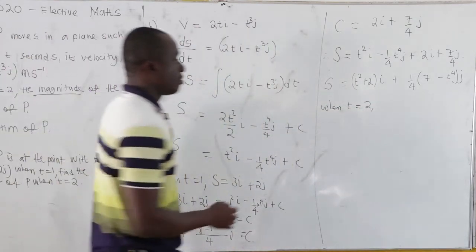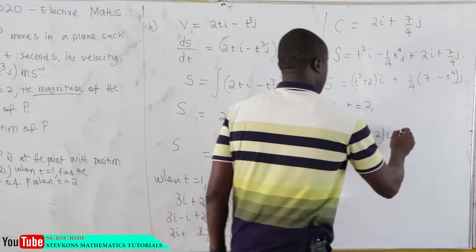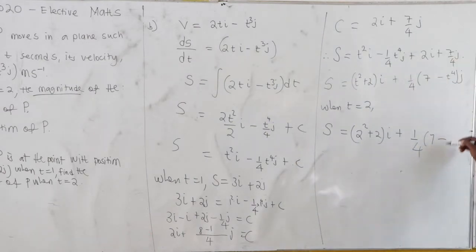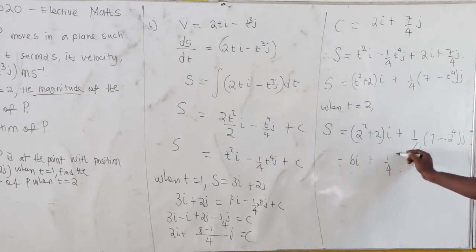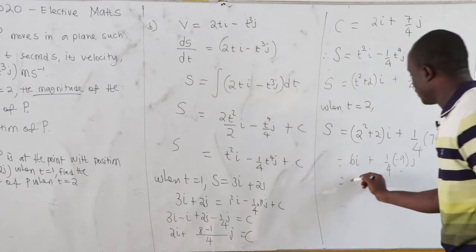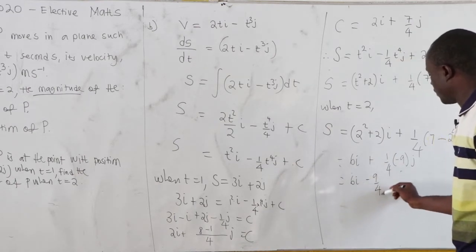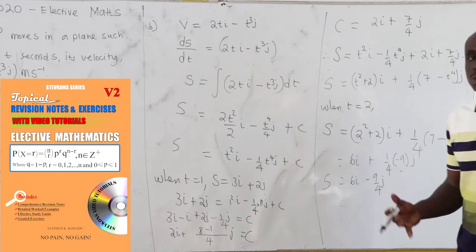When t equals 2: s becomes (2² + 2)i plus (1/4)(7 minus 2⁴)j. That is (4 + 2)i plus (1/4)(7 minus 16)j, giving 6i plus (1/4)(negative 9)j, which is 6i minus 9/4 j. This is our position vector when t equals 2.